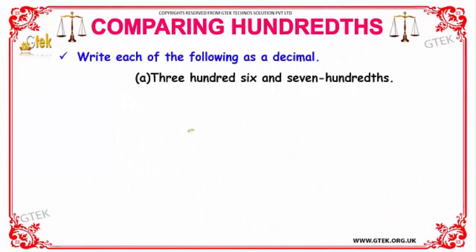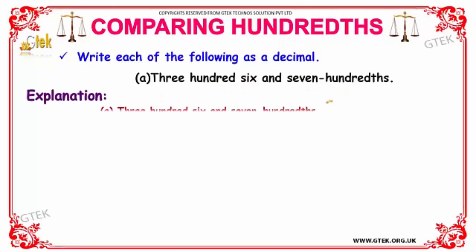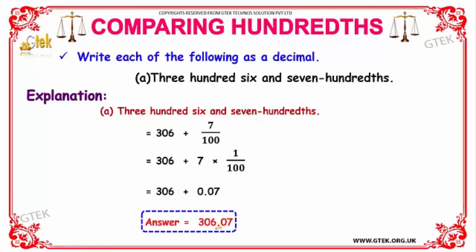Let's see an example. We have 306 and 700 hundredths. This is represented as 306 plus 700/100. Since the denominator is 100, 7 divided by 100 is further simplified as 7 multiplied by 1/100, which is simply 0.07.